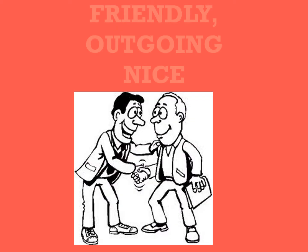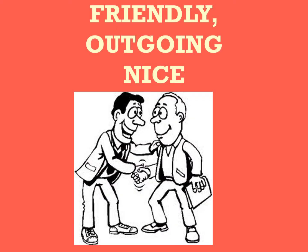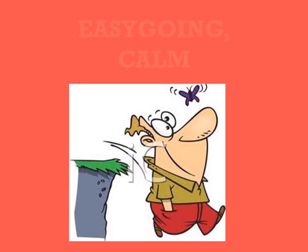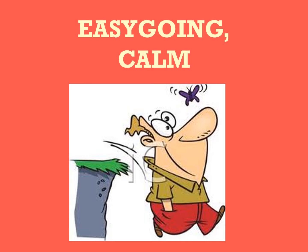The next one is the friendly person, or outgoing, or nice — all of these have the same meaning: to be friendly with others. What about easy-going? He is very calm. To be calm or easy-going means you are not nervous at all, you are not irritable.